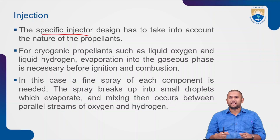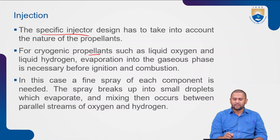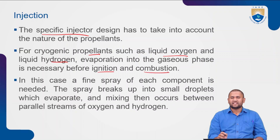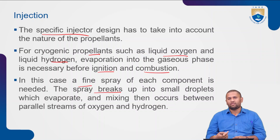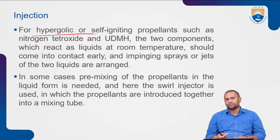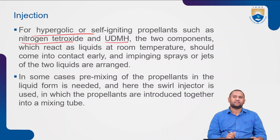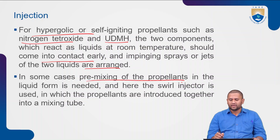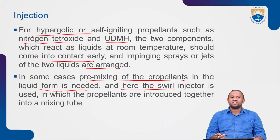The specific injector design must account for the nature of the propellants. For cryogenic propellants such as liquid oxygen and liquid hydrogen, evaporation into gaseous phase is necessary before ignition and combustion. A fine spray that breaks up into small droplets is needed — the droplets evaporate and mixing then occurs between parallel streams of oxygen and hydrogen. For hypergolic or self-ignitive propellants such as nitrogen tetroxide and UDMH, these react as liquids at room temperature and should come into contact early. Impinging spray or jets are arranged, and in some cases pre-mixing in a swirl injector is used, where propellants are introduced together into a mixing tube.